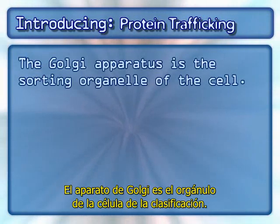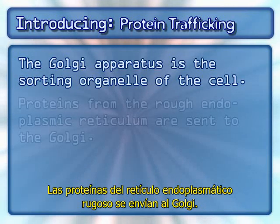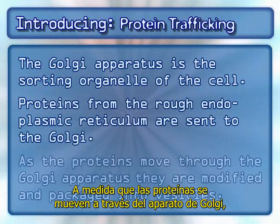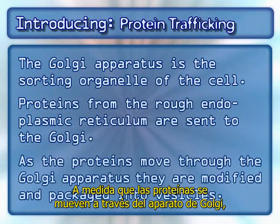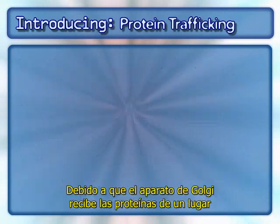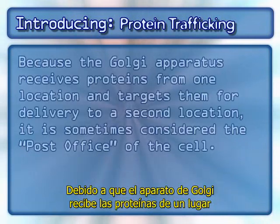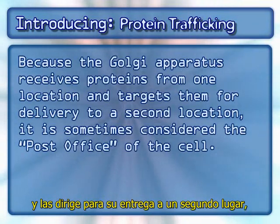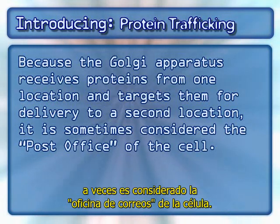The Golgi apparatus is the sorting organelle of the cell. Proteins from the rough endoplasmic reticulum are sent to the Golgi. As the proteins move through the Golgi apparatus, they are modified and packaged into vesicles. Because the Golgi apparatus receives proteins from one location and targets them for delivery to a second location, it is sometimes considered the post office of the cell.